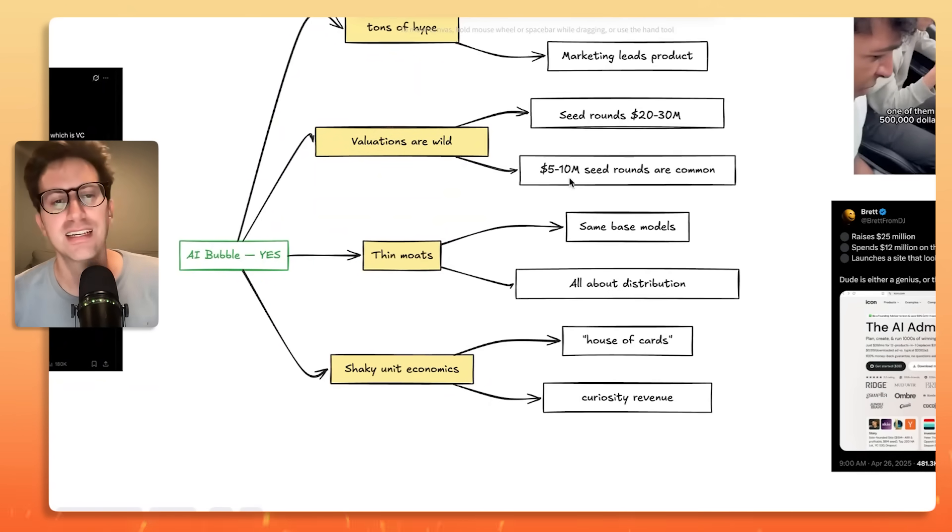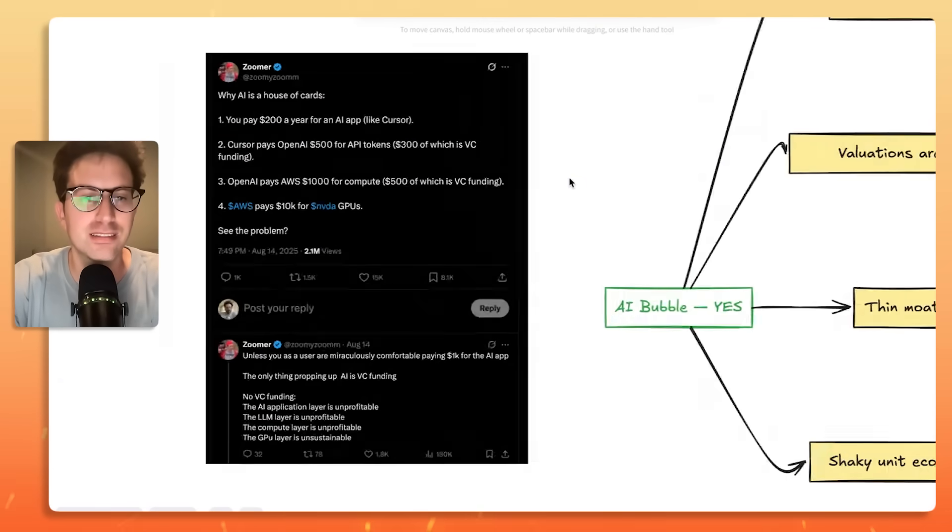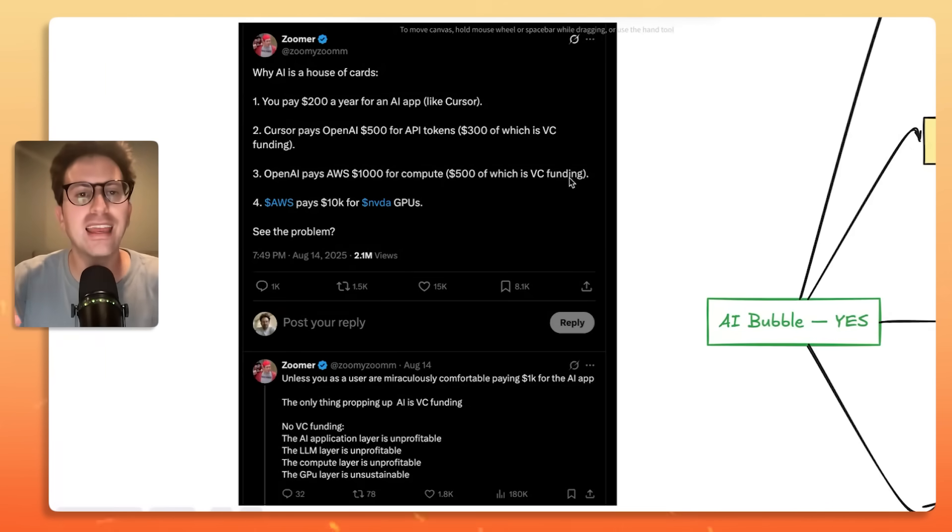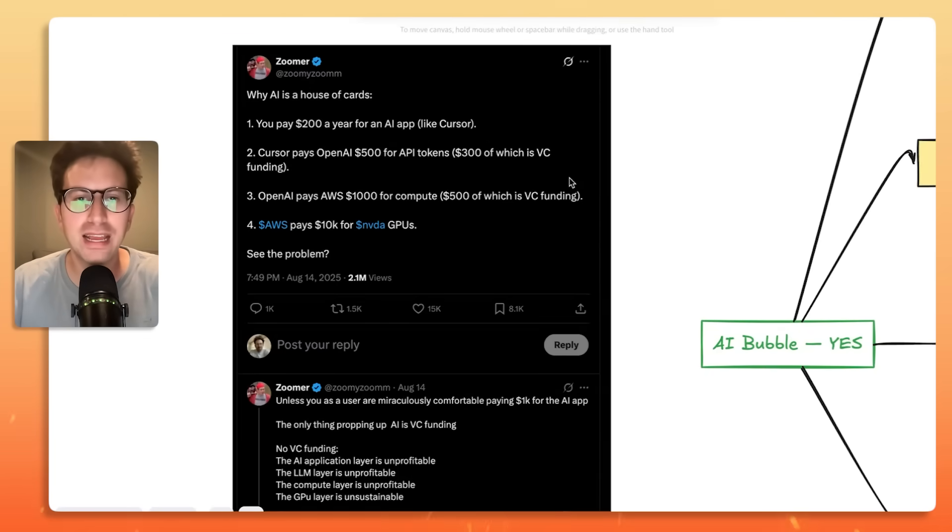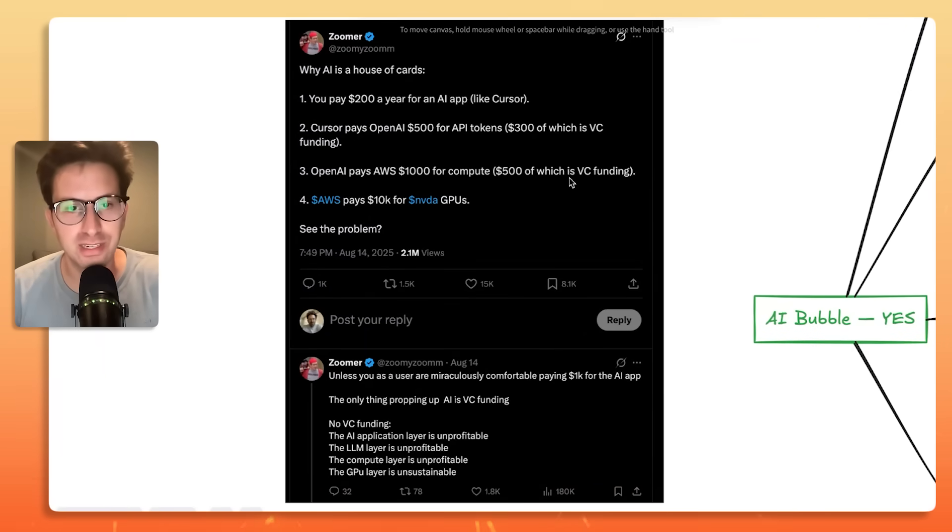The last thing, one of the main reasons why people say it's an AI bubble is there is shaky unit economics with AI startups. So what they say is, I saw this tweet that summarizes it quite well. It got 2 million views. Why is AI a house of cards? Number one, you pay $200 a year for an AI app like Cursor. Cursor pays OpenAI $500 for API tokens, $300 of which is VC funding.